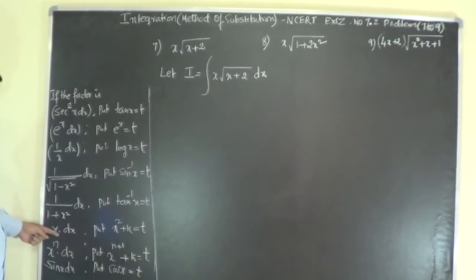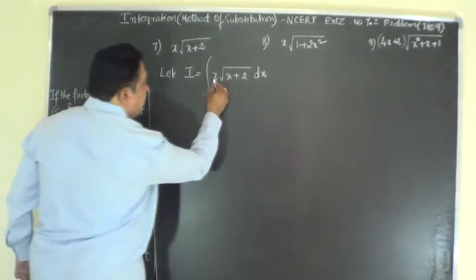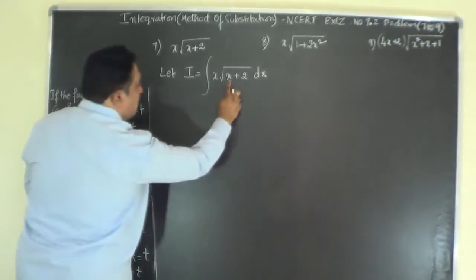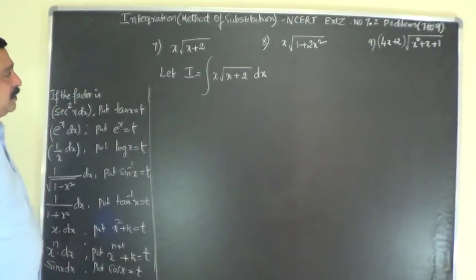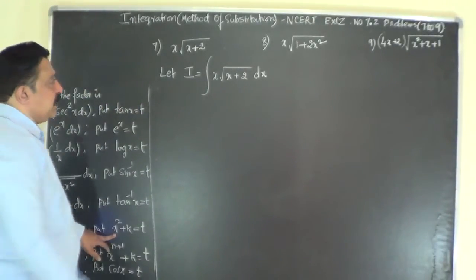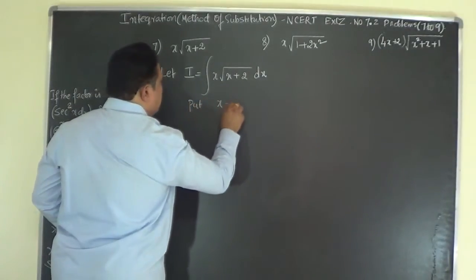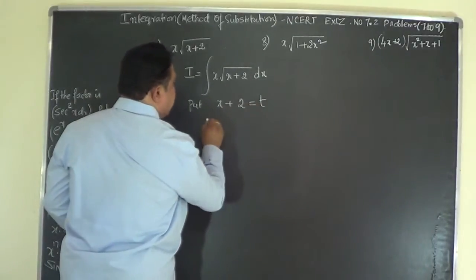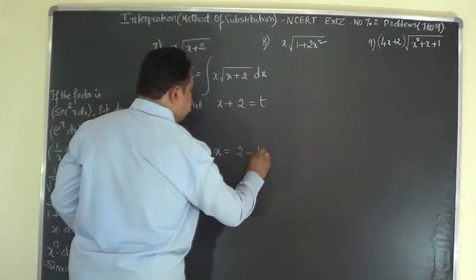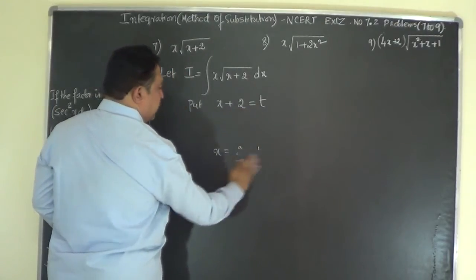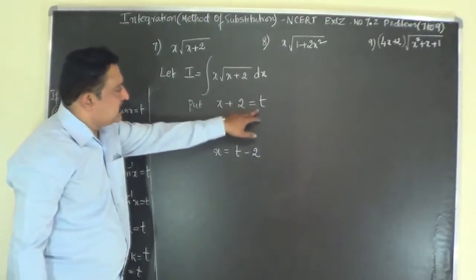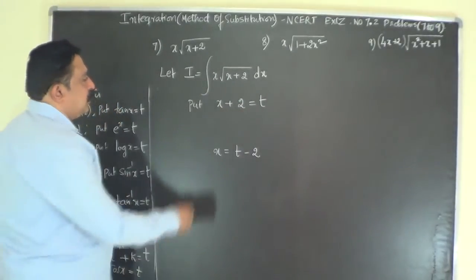If the problem consists of x dx as a factor — you have x and dx here — then put x squared plus k equals t, or whatever term is present inside the bracket. So we put x+2 equal to t. If x+2 equals t, then x equals t minus 2.